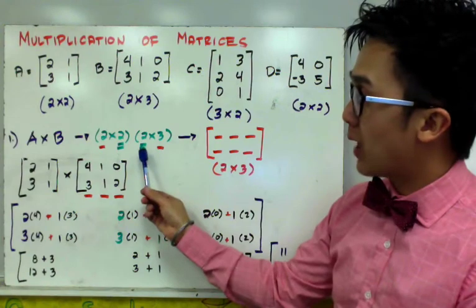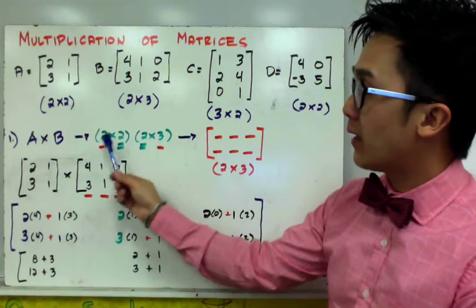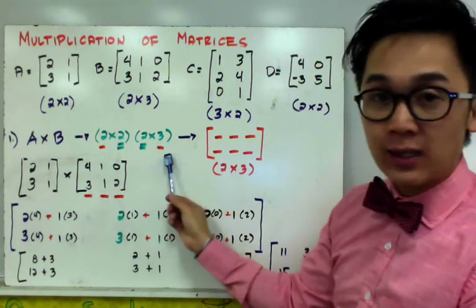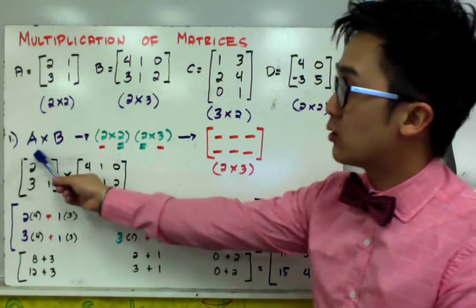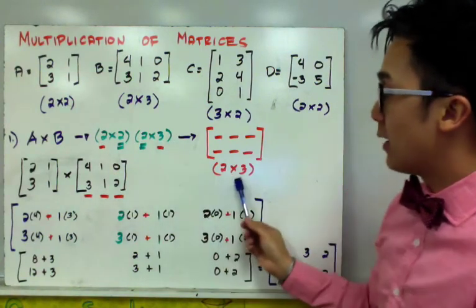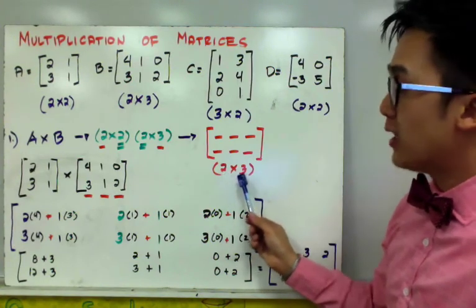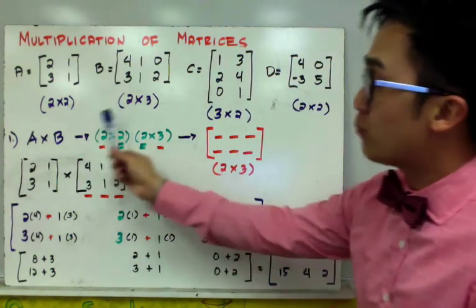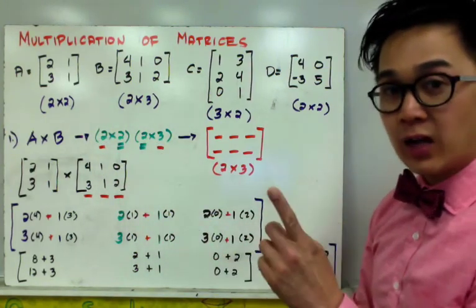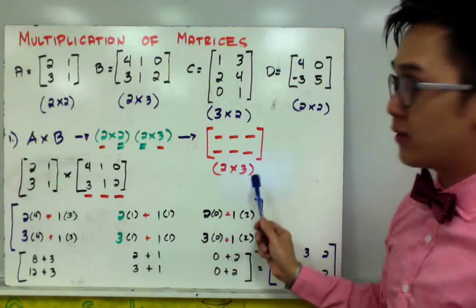To verify if matrix A and matrix B can be multiplied, just line up their orders, and if the middle values are the same, then it's verified that we can multiply the two matrices. Another important thing is that the outer number will dictate the order of the product. Since the outer numbers are 2 and 3, the product of A times B will be a 2 by 3 matrix. So it's very important to write out the order of the two matrices to verify if you can multiply them and to know the order of the product.